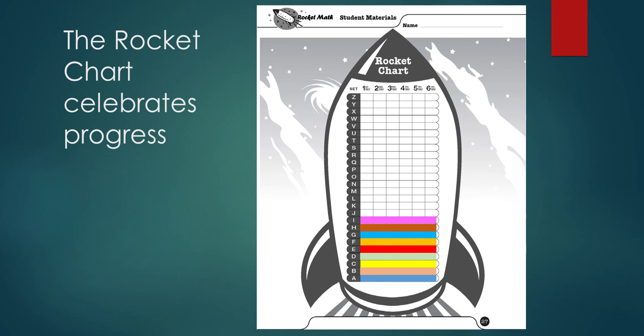Students who meet their individualized goal on the one-minute test pass that set and get to color in that set on their rocket chart. They start on a new set the next day. Students who don't pass take home their worksheet and do the same set again the next day.